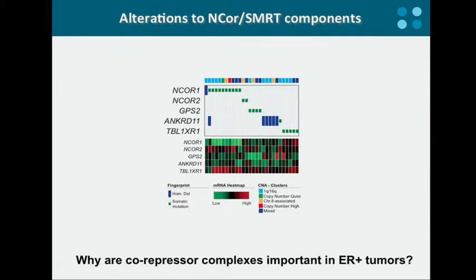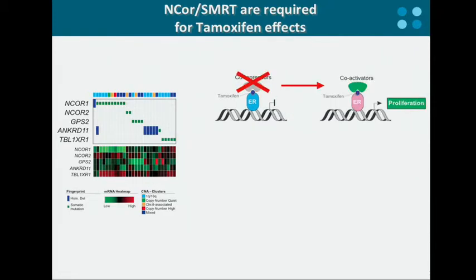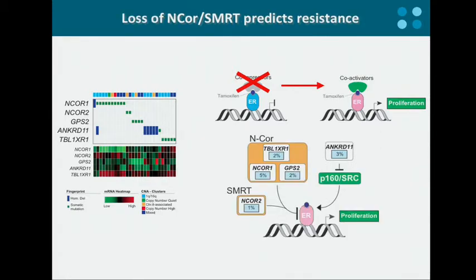Why are corepressor complexes relevant in ER-positive luminal tumors? In these tumors, proliferation is mostly driven by the estrogen receptor, and ER activity can be blocked therapeutically using an estrogen antagonist called tamoxifen, which recruits corepressor complexes to block the ER transcriptional program. However, it has been shown in breast cancer cells that loss of corepressor complexes may actually turn tamoxifen into a promoter of ER-driven proliferation by recruiting coactivator complexes instead. So we now have a set of genomic alterations directly linked to loss of corepressor complexes that may therefore predict lack of response to endocrine therapy.